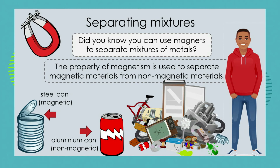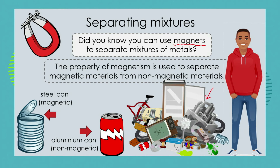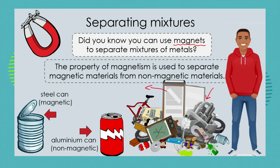Did you know that you could use magnets to separate different mixtures of metals? So now we're moving away from sieving and filtration into something very different. Imagine we had this scrap heap and wanted to start sorting things out. We could take all the plastic items out by hand and we'd be left with an assortment of different metals — so how do we go about sorting those out?